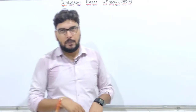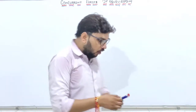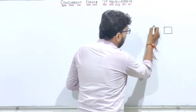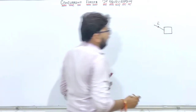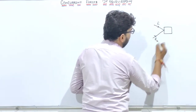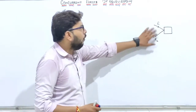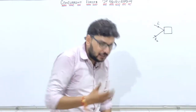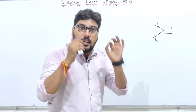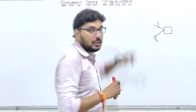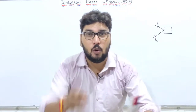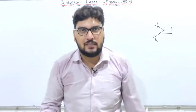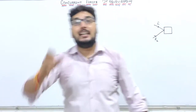We will understand this topic on the basis of an example. If there is a body on which force F1 is acting in one direction and force F2 in another direction, then concurrent forces are acting on this body. Equilibrium ka matlab kya hota hai? Ki bahut saari forces kisi body pe lag rahi ho, aur sab forces lagne ke baad bhi woh body jab apni state change na kare — that is called equilibrium.